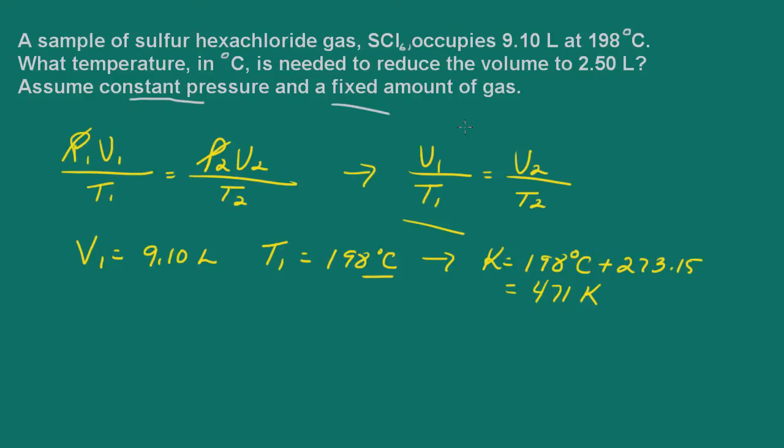So now we're being told that we want to reduce the volume to 2.5 liters. So what is this temperature in Celsius going to be? What we're looking for is the final temperature, and we know that the final volume is 2.5 liters.